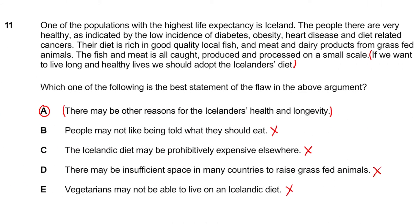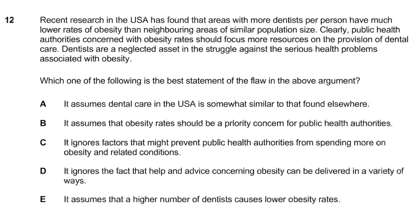Previously we looked at the Icelandic diet question and saw the other common angle for flaw questions — correlation does not equal causation. Now let's move on to Question 12: 'Recent research in the USA has found that areas with more dentists per person have much lower rates of obesity than neighbouring areas of similar population size. Clearly, public health authorities concerned with obesity rates should focus more resources on the provision of dental care. Dentists are a neglected asset in the struggle against the serious health problems associated with obesity.' Which of the following is the best statement of the flaw in the above argument?